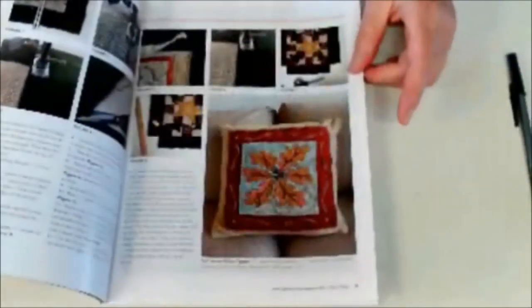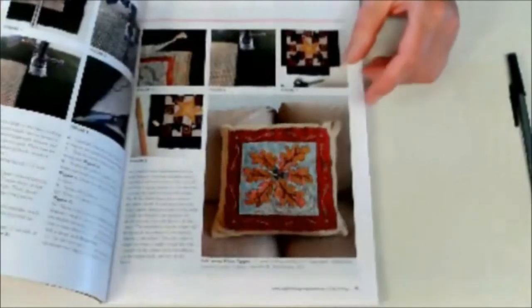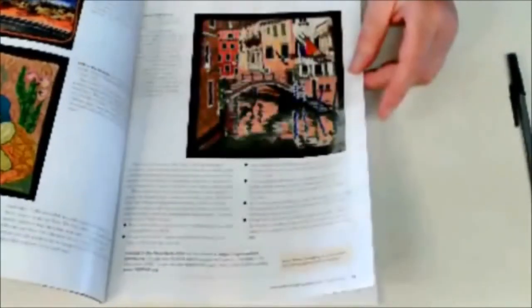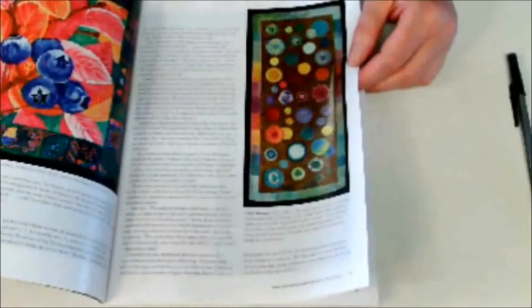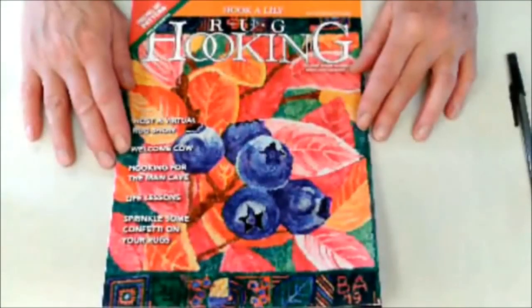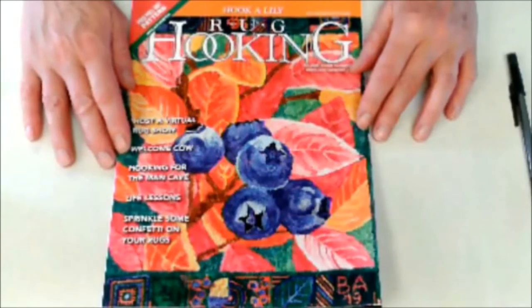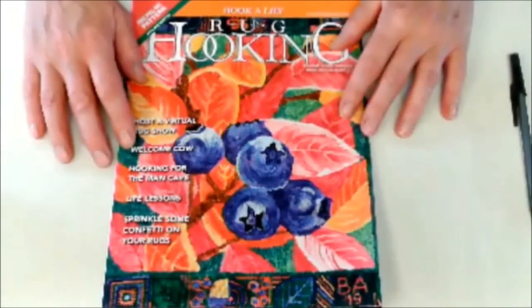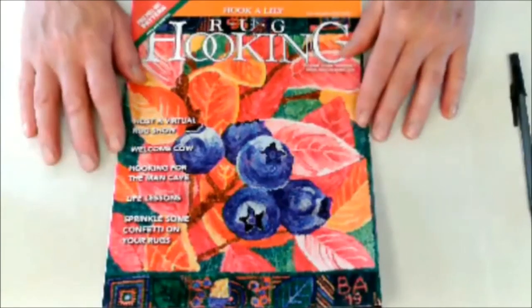Every issue of the magazine has projects and the designers are listed so you can follow one lead to another. One project that you like, it will say who the designer was. You go to the designer's website. They have a whole bunch of other resources for you. Rug hooking magazine itself is an excellent place to start. Also, just do online Google searches for rug hooking materials, rug hooking designers, rug hooking classes. There is a lot of rug hooking stuff out there.